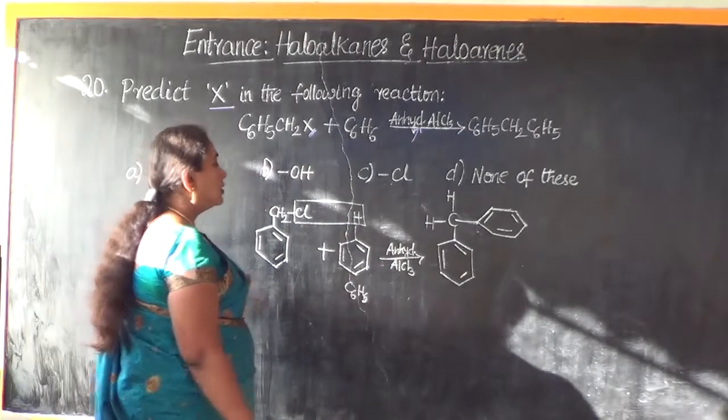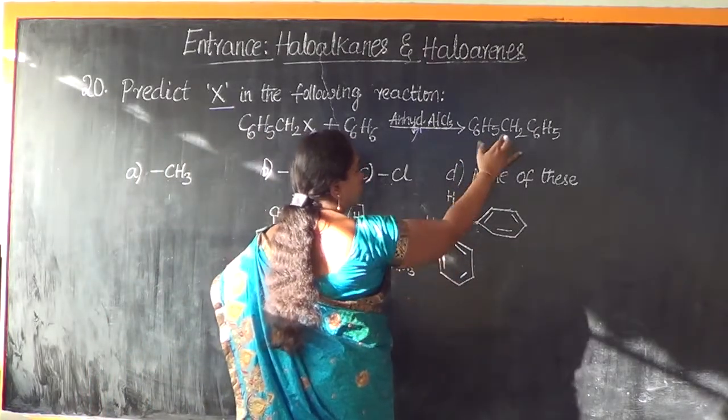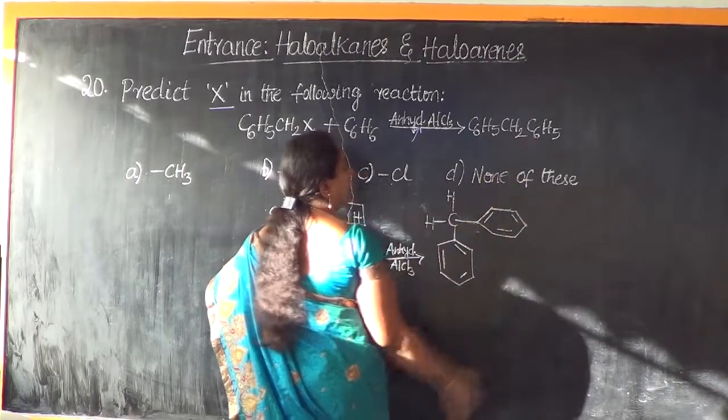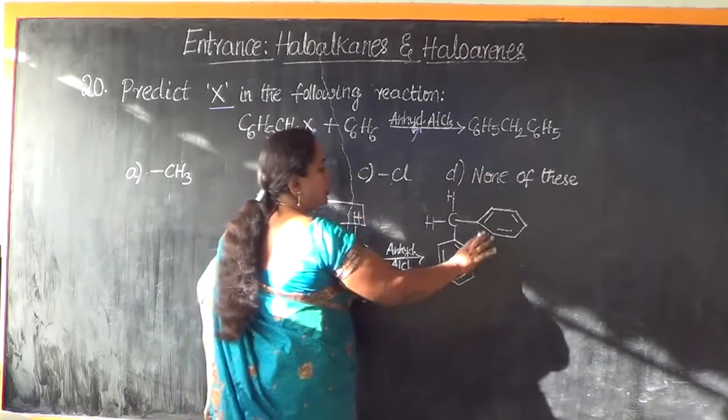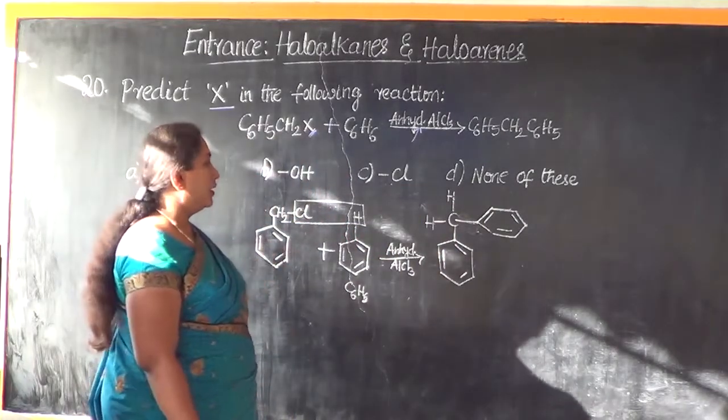So, now what is the answer going to be? C6H5, CH2, C6H5. So, it is going to be diphenylmethane.